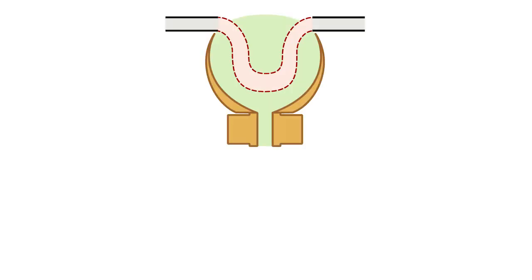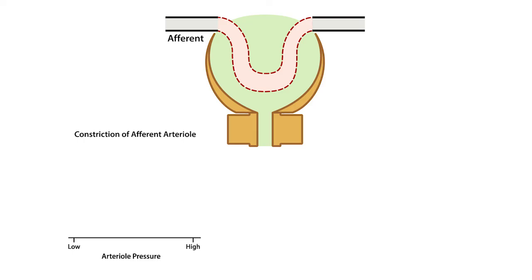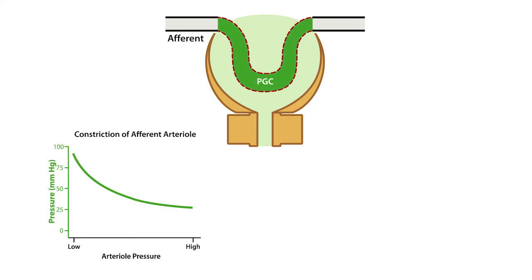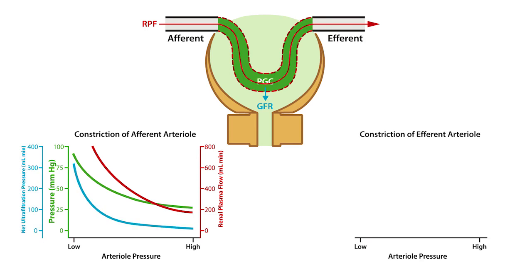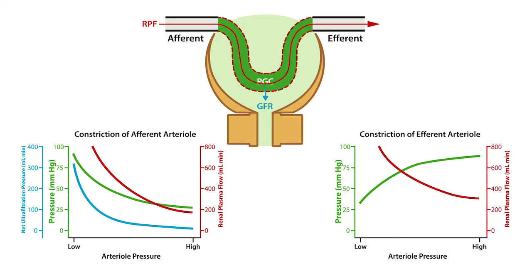In conclusion, increases in afferent arterial resistance result in decreased glomerular capillary hydrostatic pressure, which leads to a decrease in renal plasma flow and a decrease in GFR, or net ultrafiltration pressure. Conversely, increases in efferent arterial resistance result in increased glomerular capillary hydrostatic pressure, which leads to a decrease in renal plasma flow and an initial increase in GFR, or ultrafiltration pressure.